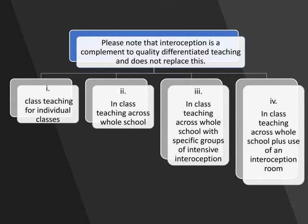The third one is you have whole class teaching across your whole school, but some groups have extra. So it might be that all your kids who have out-of-class interventions — say you do mini-lit in your school — before they do mini-lit, they do a little bit of interoception. It's not hard. But what that does is all those kids that arrive dysregulated get a chance to regulate.